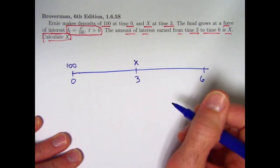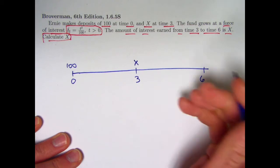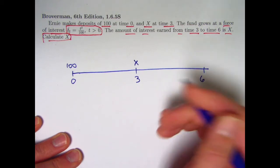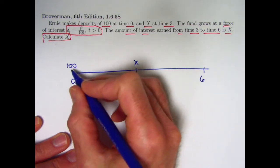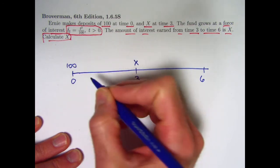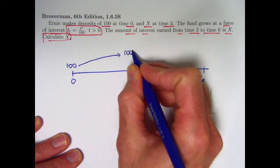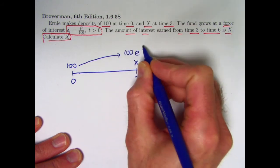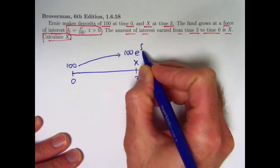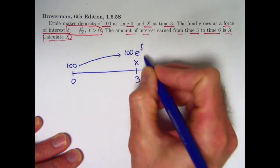What does it mean to grow according to a force of interest? I'm just going to tell you. It's something you should look up if you've forgotten. For example, it means this 100 deposit at time 0 will grow to 100 times e to the integral of the force of interest from time 0 to time 3.